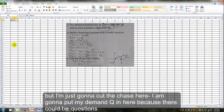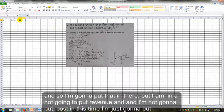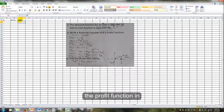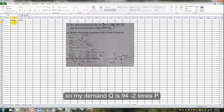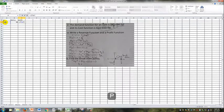I am going to put my demand q in here, because there could be questions where I want some information about the quantity. I'm going to put that in there, but I'm not going to put revenue in, and I'm not going to put cost in this time. I'm just going to put my profit function in. So my demand q is 94 - 2p, and my profit function is -2p² + 85p - 650.